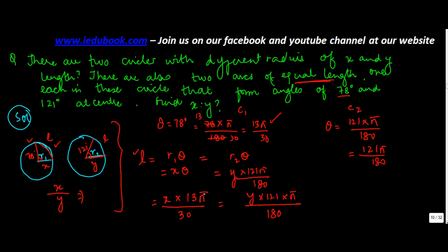Shall we solve this? This will go into this. 30 will go into 180 six times, right? I don't think it cancels now. If you solve the equation, you multiply this by this, so you get x into 13 into 6 is equal to 121 y.